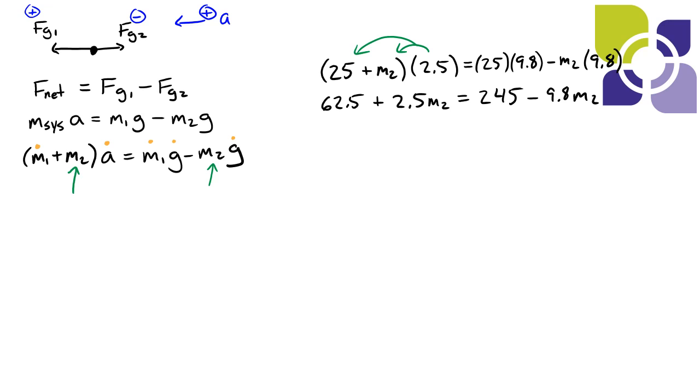So I've simplified things a little bit and I've expanded that multiplication on the left hand side of the equation and now we're very close to getting our m2's together so that we can solve for it. So what I'm going to do is I'm going to add 9.8 m2 to each side of this equation and I'm also going to subtract 62.5 from each side of this equation so that I have 2.5 m2 plus 9.8 m2 is equal to 245 minus 62.5.